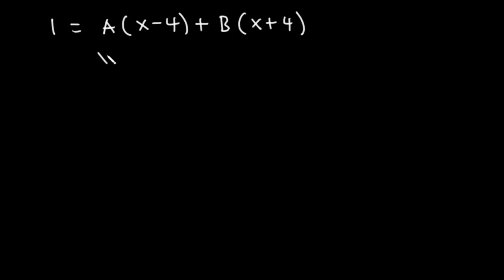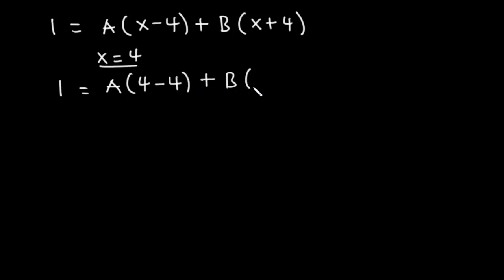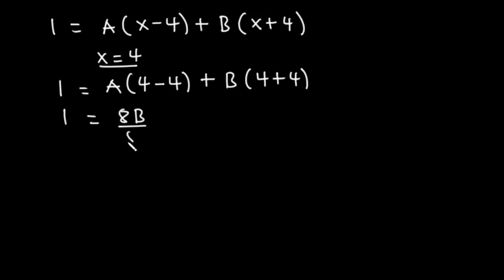Let's make x equal to 4. When x = 4: 1 = A(4 - 4) + B(4 + 4). Now 4 - 4 = 0, so the A term vanishes. 4 + 4 = 8, giving us 8B. Dividing both sides by 8, we get B = 1/8.